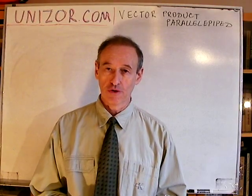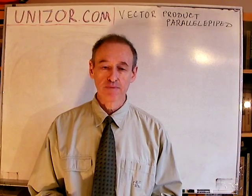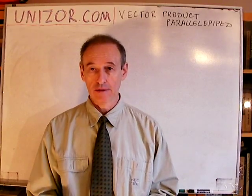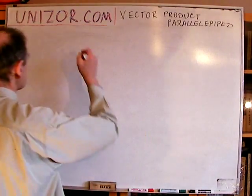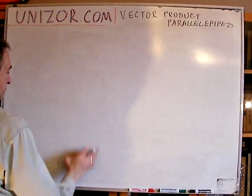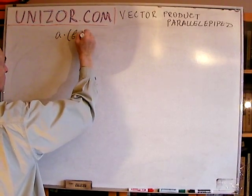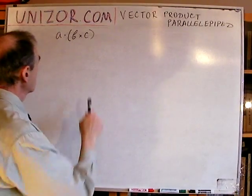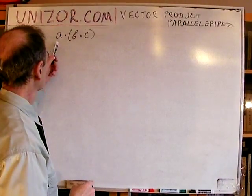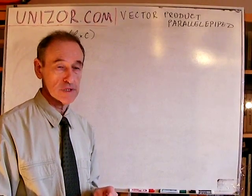Hi, I'm Zor. Welcome to your new Zor education. Let me address another aspect of vector product. In this particular case, it would be a combination of scalar and vector product. I'm talking about this particular expression: first, we have the vector product of vectors B and C, and then we have a scalar product of vector A by the result of B times C.